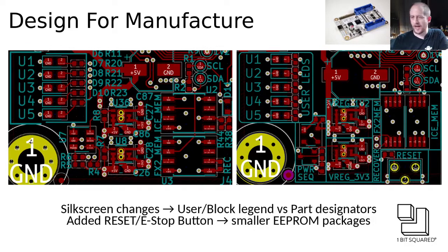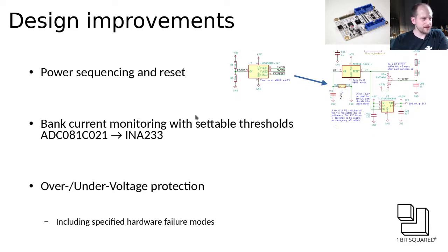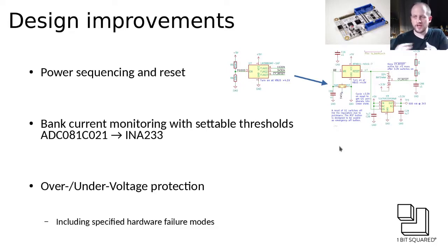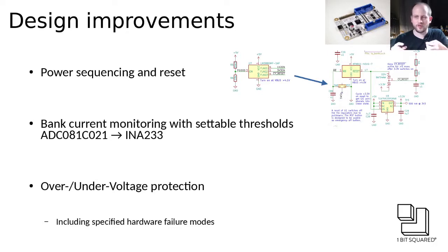We also allowed ourselves a little bit of feature creep too — one thing we added is a reset button. This reset button is tied into an improved power cycling circuitry, which allows us to switch on the power rails in the right order and reset the parts that are necessary. For example, there are several parts that are on the I2C bus and they don't have dedicated reset pins, so if you want to hard reset them you have to basically power them off and power them on again. This improvement allowed us to do certain things like that and also tie in the reset button.